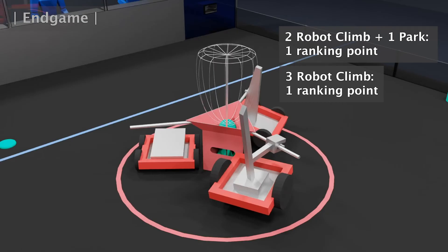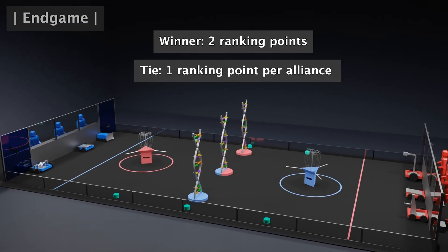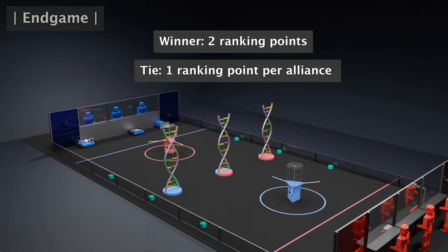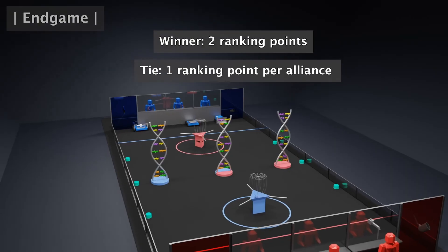Should all three nanobots successfully climb, or two nanobots climb at one nanobot parks, protein transport is considered complete. The alliance with the most points by the end of the match wins and repairs the cell.